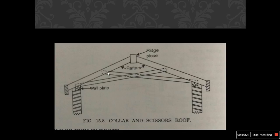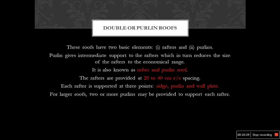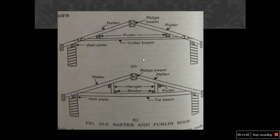Double or purlin roofs have two basic elements: rafters and purlins. Rafters are provided at 40 cm center-to-center spacing, and each rafter is supported at three points: ridge, purlin, and wall plate. For larger roofs, two or more purlins may be provided to support each rafter. In this configuration, the collar beam connects the rafter, and the collar beam is connected by means of purlin, supported on the wall plate.